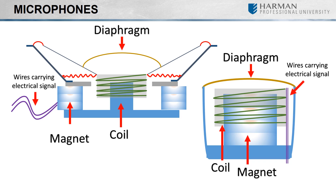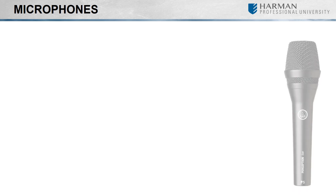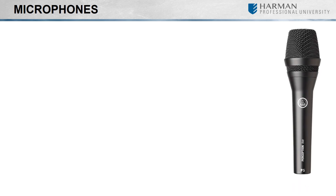There are of course different categories of microphones, and within each category there are different types. The most common types of microphones you will find yourself working with in installed sound applications are dynamic and capacitor, or more commonly referred to as condenser. The names of these loosely describe how the microphone converts sound waves into electrical energy. Any one of these types of microphones can then be manufactured for a host of different applications, but we'll get more into that later.